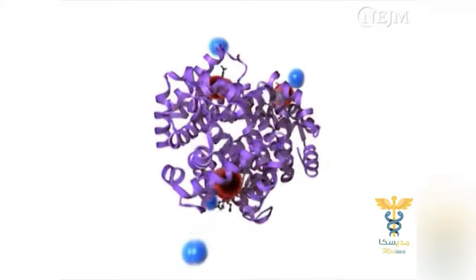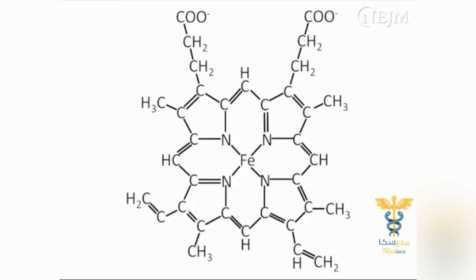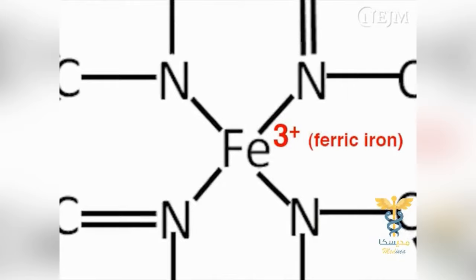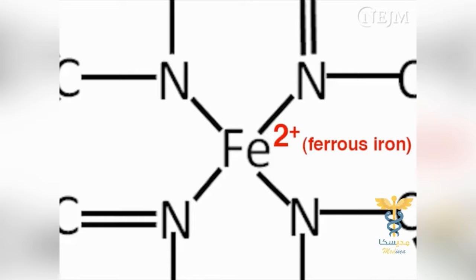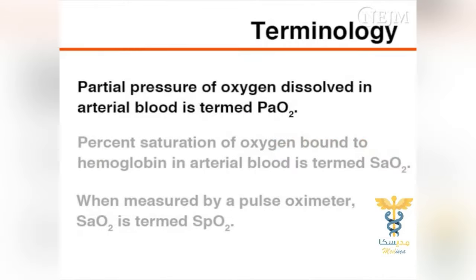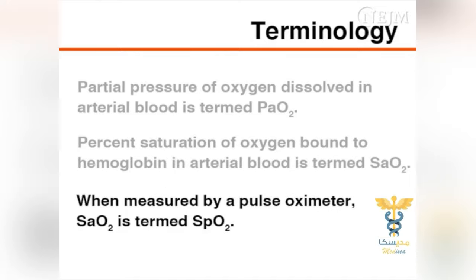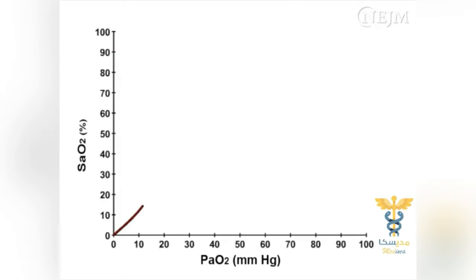Non-functional hemoglobin is unable to bind or transport oxygen and is present as carboxyhemoglobin and methemoglobin. Carboxyhemoglobin is hemoglobin bound to carbon monoxide. Methemoglobin is hemoglobin that contains ferric iron, Fe3+, an oxidized form of the oxygen-carrying ferrous iron, Fe2+, which is found in functional hemoglobin. The partial pressure of oxygen dissolved in arterial blood is termed PaO2. The percent saturation of oxygen bound to hemoglobin in arterial blood is termed SaO2. When measured by a pulse oximeter, SaO2 is termed SpO2.